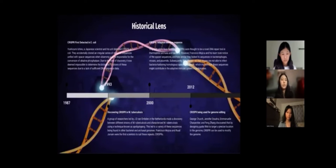Here's a historical lens of CRISPR. CRISPR was first detected in E. coli in 1987. Yoshizumi Ishinow, a Japanese scientist, and his unit detected CRISPR in E. coli. They accidentally cloned an irregular series of repeated sequences unified with spacer sequences when observing a gene responsible for conversion of alkaline phosphatase. Due to the time of discovery, it was deemed impossible to determine the biological functions of these sequences due to a lack of sufficient DNA sequence data.